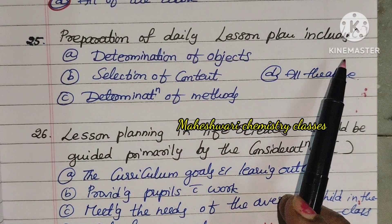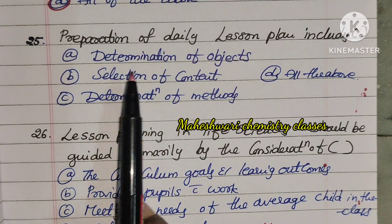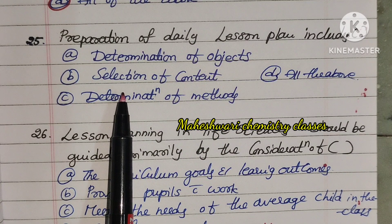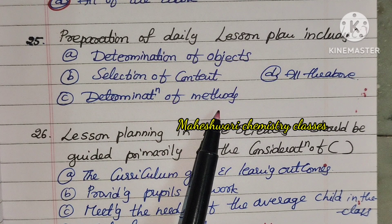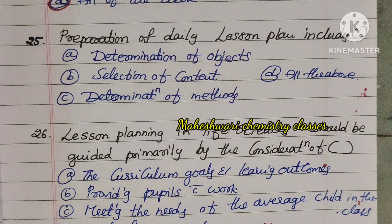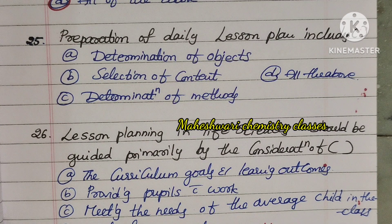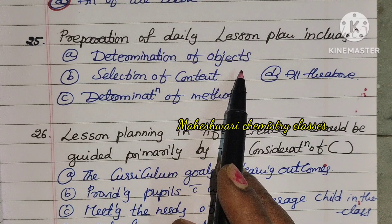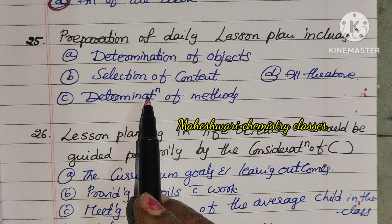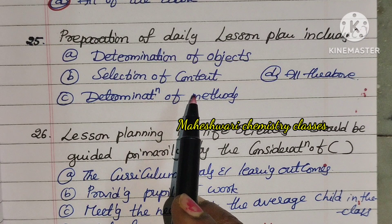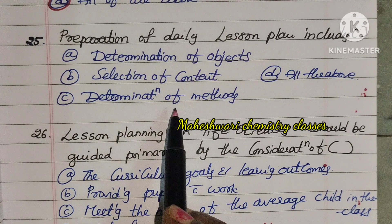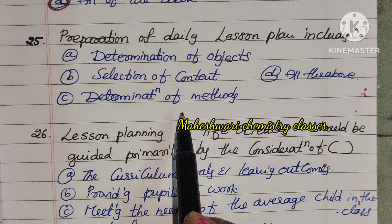Twenty-fifth question: Preparation of daily lesson planning includes — determination of objective, selection of content, demonstration of methods, or all of the above. Daily lesson planning includes determination of objectives, selection of content, and determination of methods. Option D — all of the above.